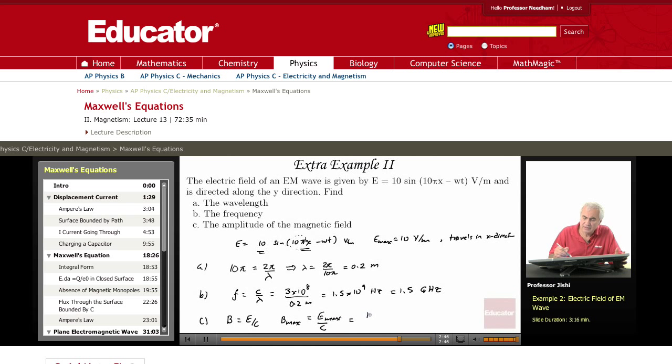E max is 10 volts per meter, and c is 3 times 10 to the 8 meters per second. So this is 3.33 times 10 to the minus 8 Tesla, which is the SI unit for the magnetic field.